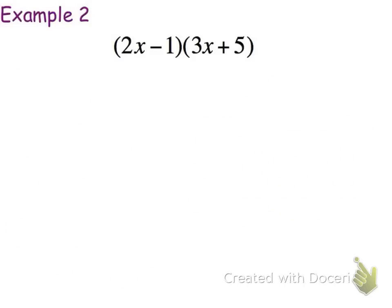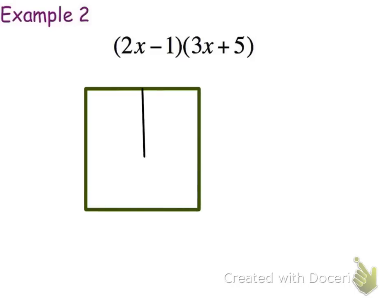Let's go ahead and try one more. So we've got 2x minus 1 times 3x plus 5. So remember that first step is going to be to draw the rectangle. And we have base times height. Now both our base and our height each have 2 pieces. So we'll split it into 4 boxes total.